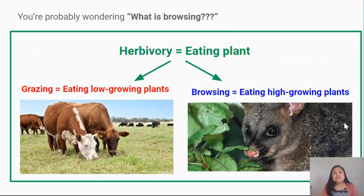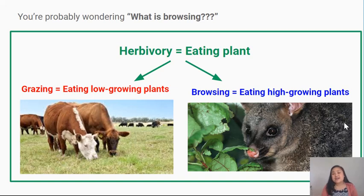You're probably wondering what browsing means. With herbivory — with eating plants — you can either eat plants via grazing or via browsing. Grazing is what cows do: eating low-growing plants like grass and weeds. Whereas browsing is eating high-growing plants, like this possum eating leaves up a tree.